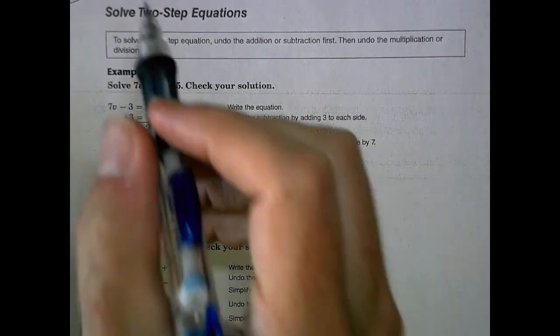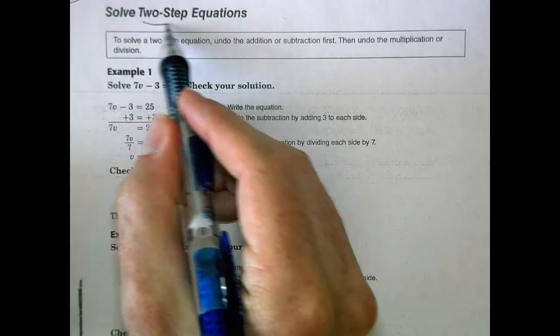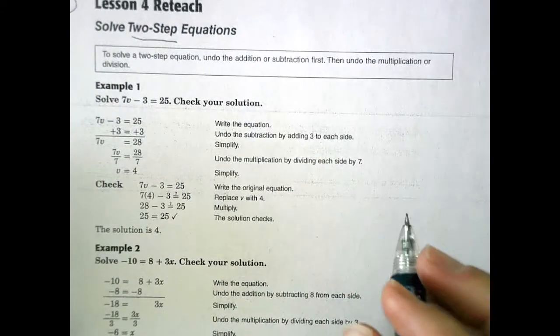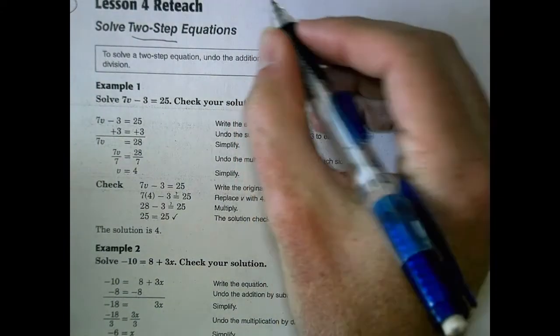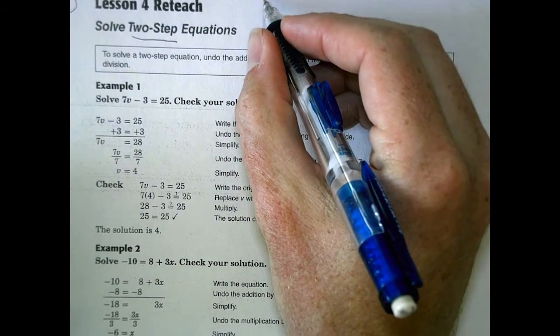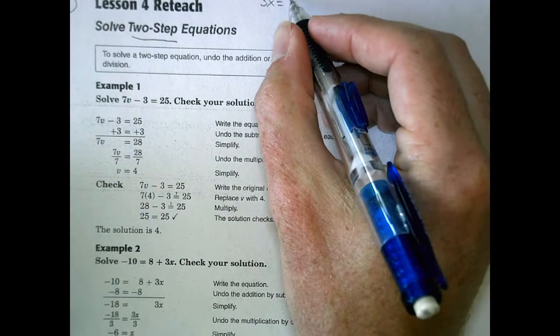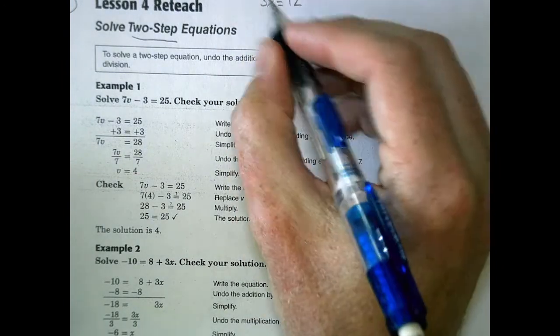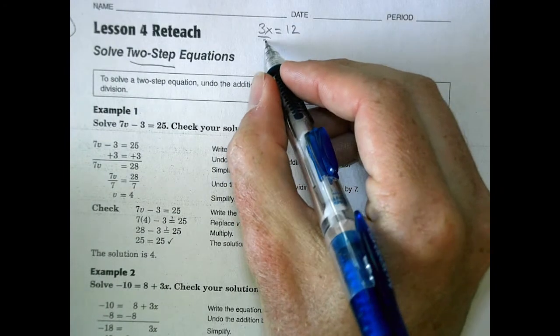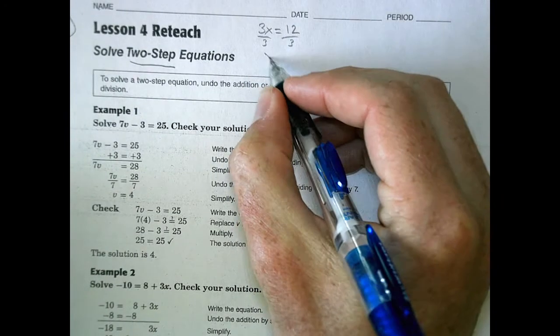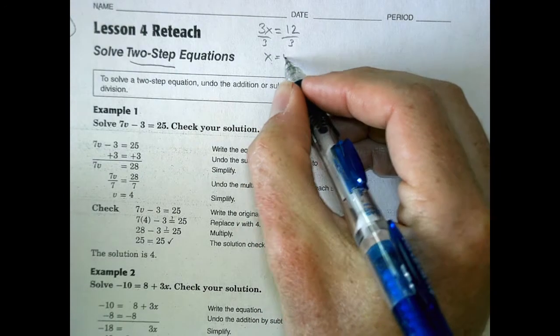Hi there. Today's lesson is going to be talking about how to solve two-step equations. So far, we've been looking at how to solve one-step equations, where you might have something like 3x equals 12, and there was one step to isolate the variable. We would divide that by 3, so x equals 12 divided by 3 equals 4.